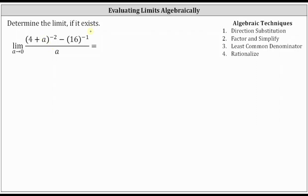We want to determine the limit if it exists. We have the limit of the rational function as a approaches zero. If we try to determine the limit by performing direct substitution, we have the indeterminate form of zero divided by zero. This does not mean the limit does not exist — it just means we cannot find the limit by performing direct substitution with the function in this form.